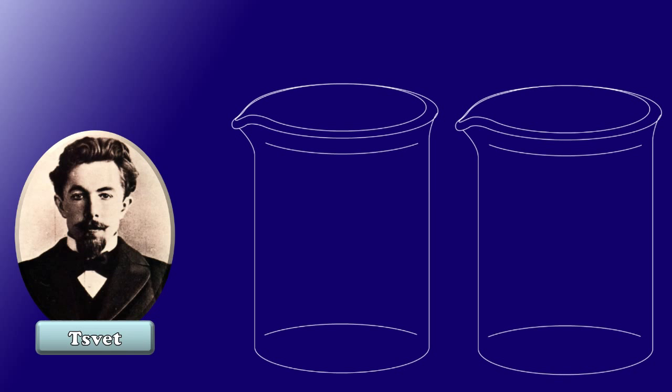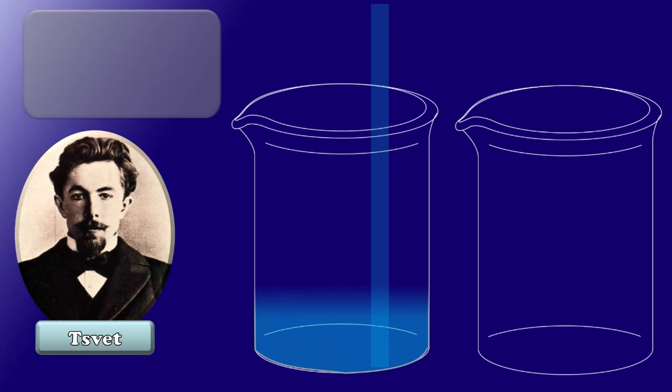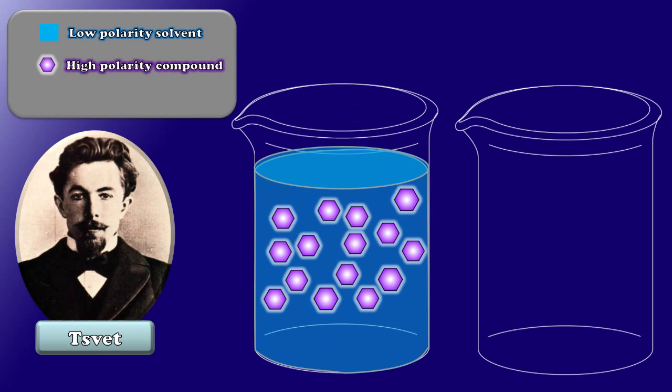Now you can't really have a conversation about chromatography without first having a conversation about Mikhail Svet. Svet was a researcher working in Russia on his second PhD when he made a very interesting observation. He was working with plant pigments and he discovered that he could dissolve many plant pigments in relatively low polarity organic solvents.